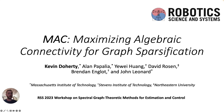The specific work I'm going to talk about today is called MAC, which is an algorithm that we developed for graph sparsification by maximizing algebraic connectivity. This is part of an ongoing project that also includes my collaborators Alan Papalia, Ye Wei Huang, David Rosen, Brendan Englott, and John Leonard.